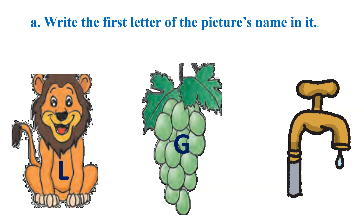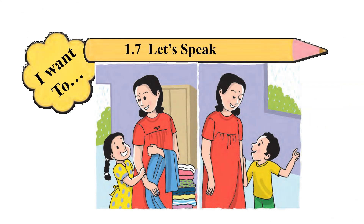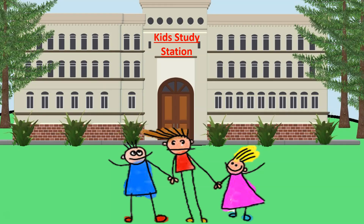Next picture is tap — T, T, tap. And letter T has sound T. Excellent! Today you have completed your activity using phonic sounds. In the next lesson, we are going to learn how to use 'I want to' in lesson 1.7 Let's Speak. So we will meet in the next lesson. Bye bye!